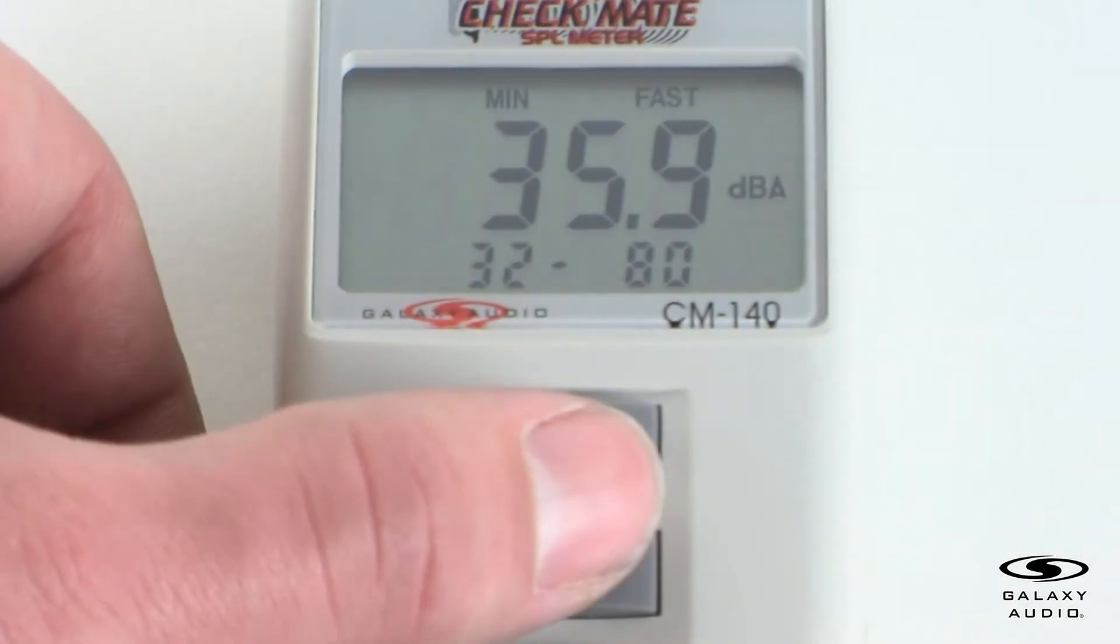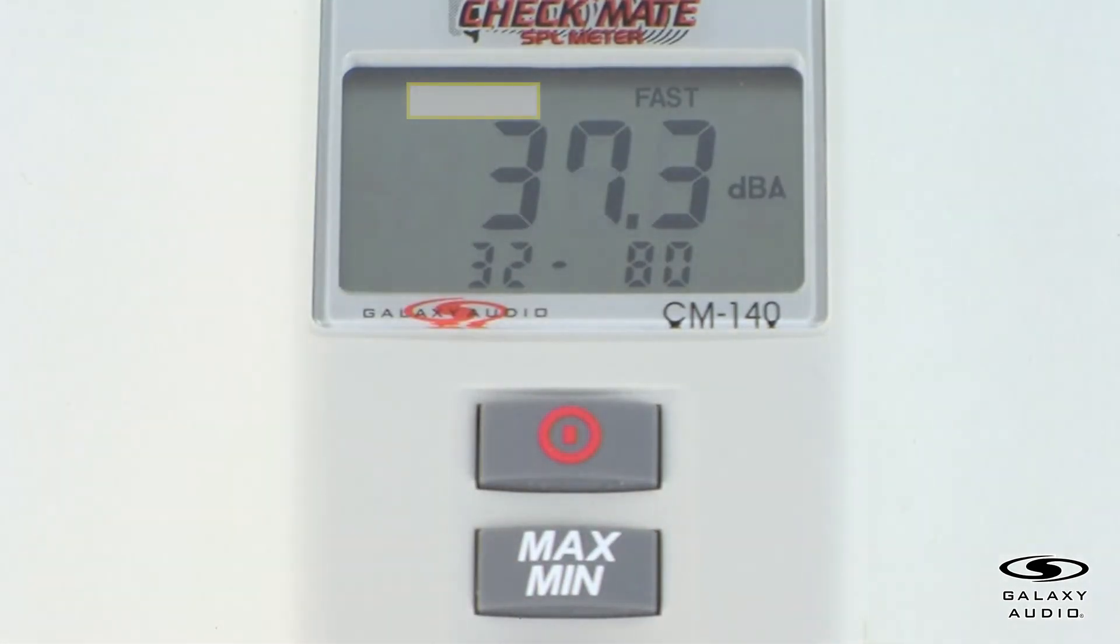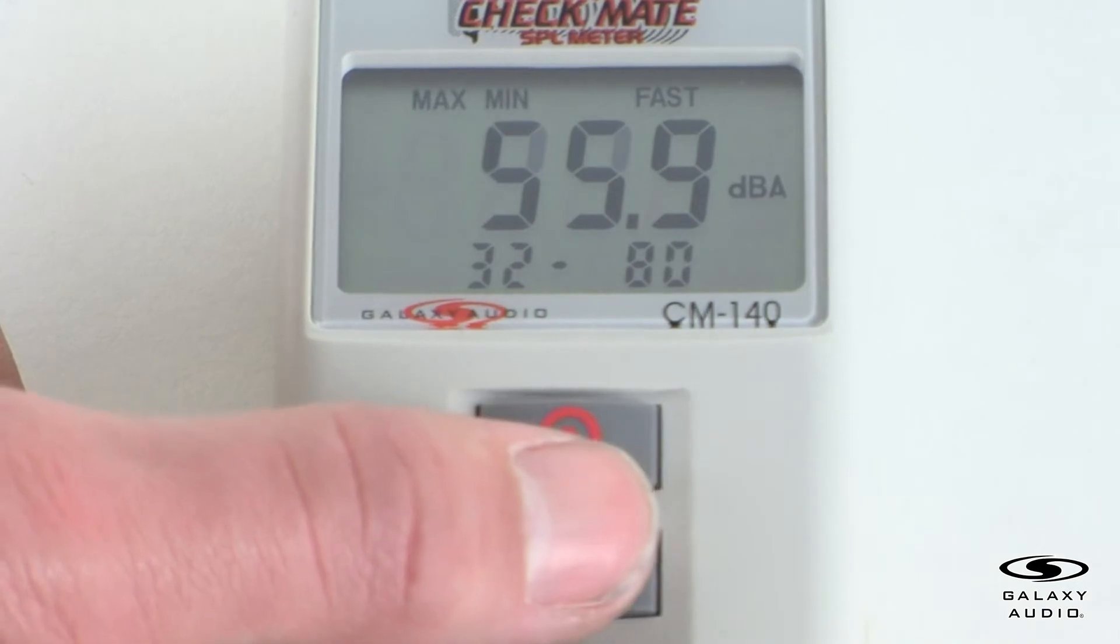Press the button again and the max-min indicator will start blinking. You can then press the button to toggle between the max and min display. To exit the max-min mode, press and hold the button down for two seconds.